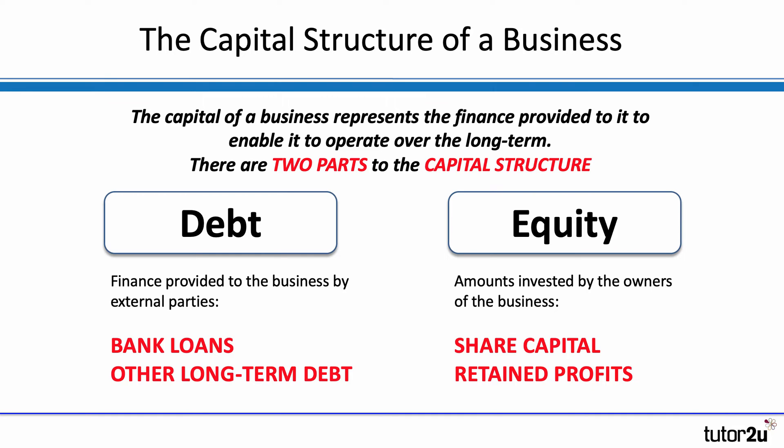On the equity side of things, there are essentially two parts to it. One is the share capital that is invested in the business by the owners — the shareholders — but also the profits that they decide to keep in the business, the retained profits. So rather than paying out profits via dividends, they keep the profits in the business, and that is a source of finance called equity.